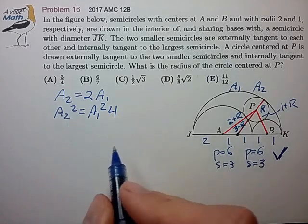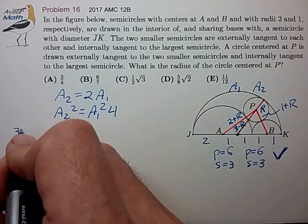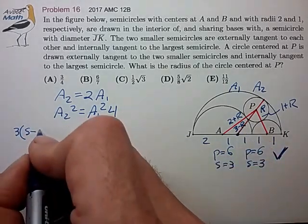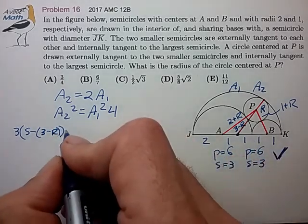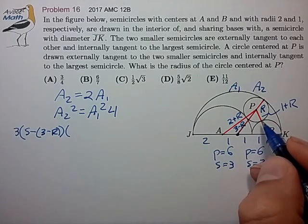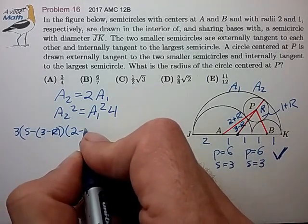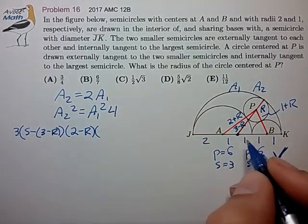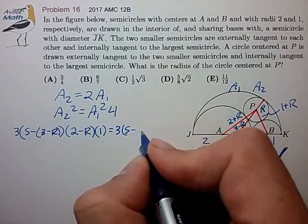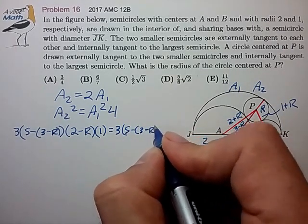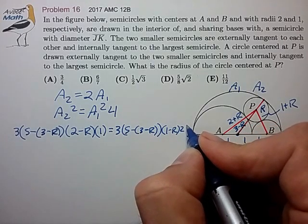For a2 squared, Heron's formula gives us that the semi-perimeter times semi-perimeter minus 3 minus R times the semi-perimeter minus 1 plus R, that's 2 minus R, times the semi-perimeter minus 2, that's just 1. And for a1, that works out to 3 minus R, 1 minus R, times 2 times 4.